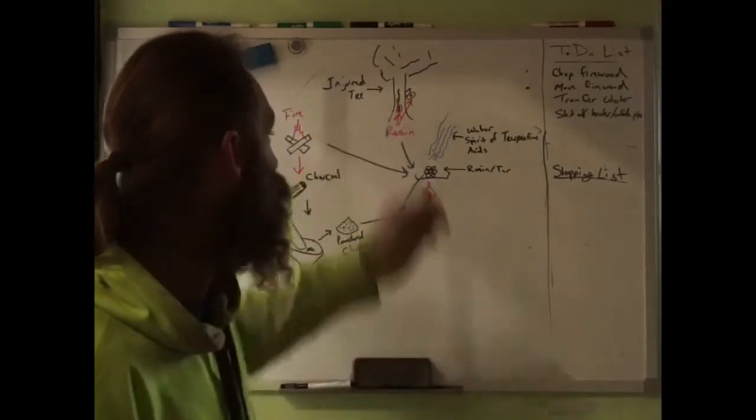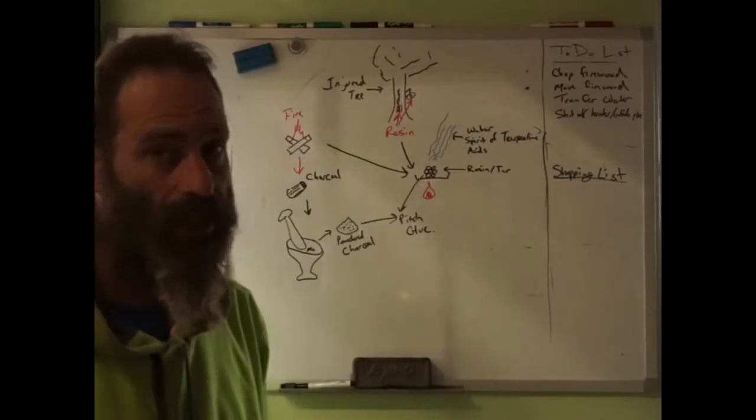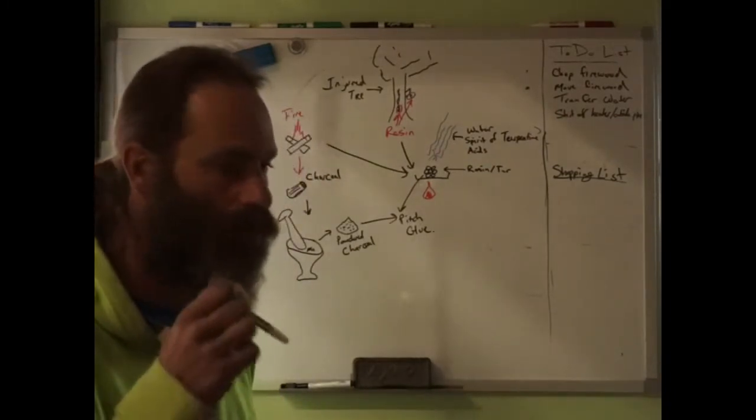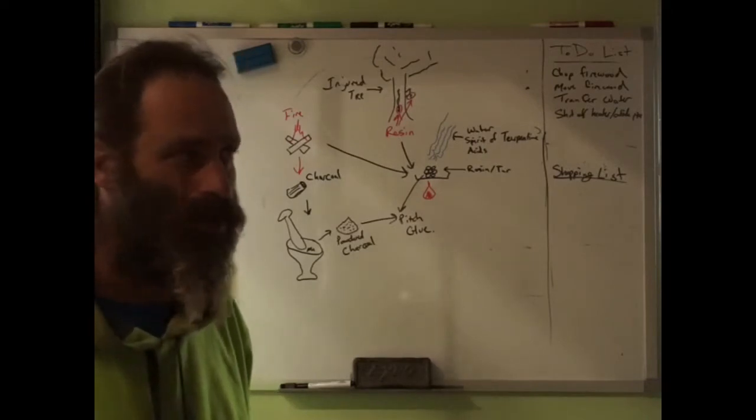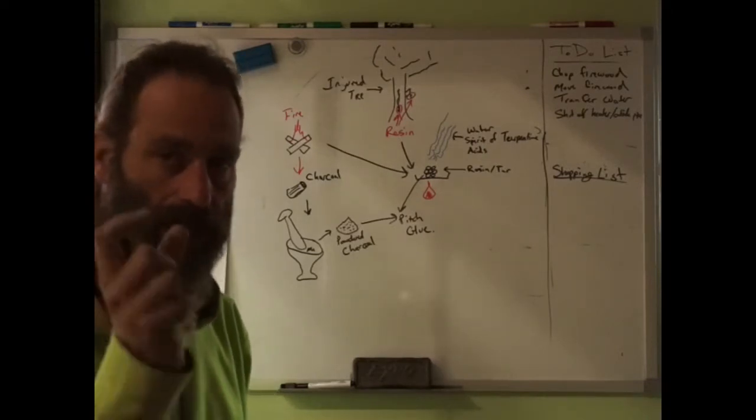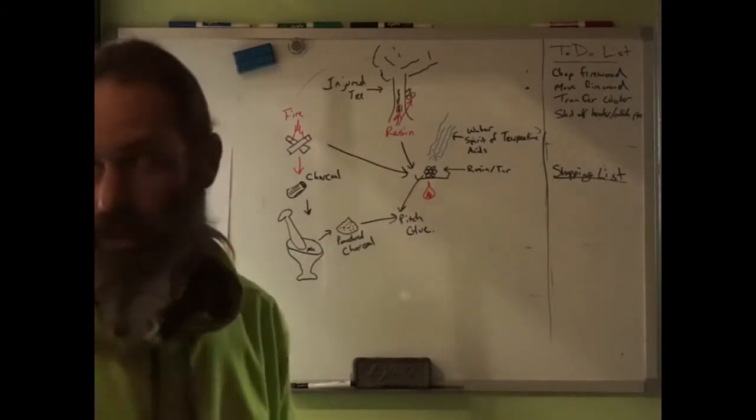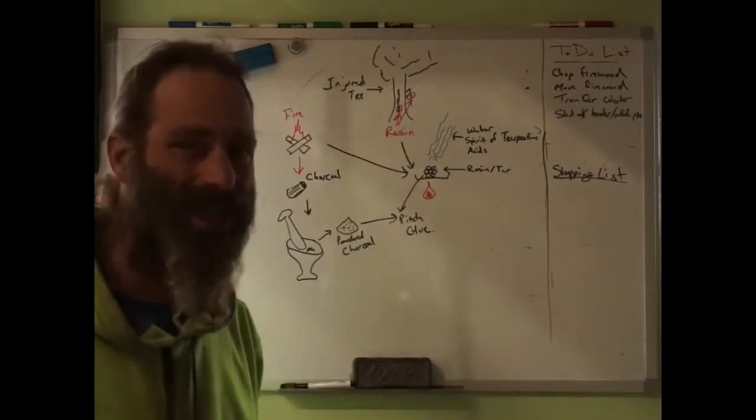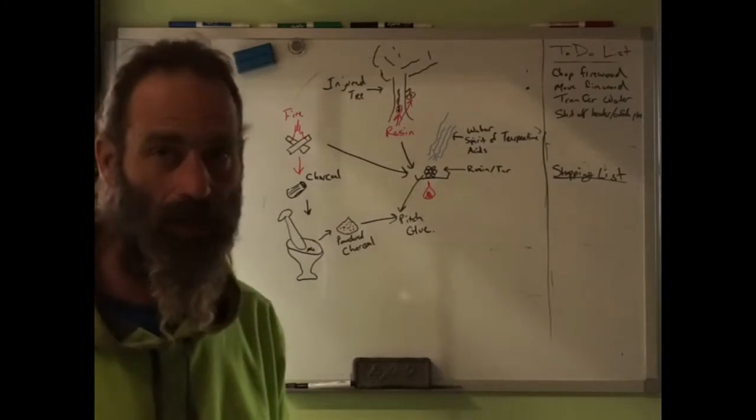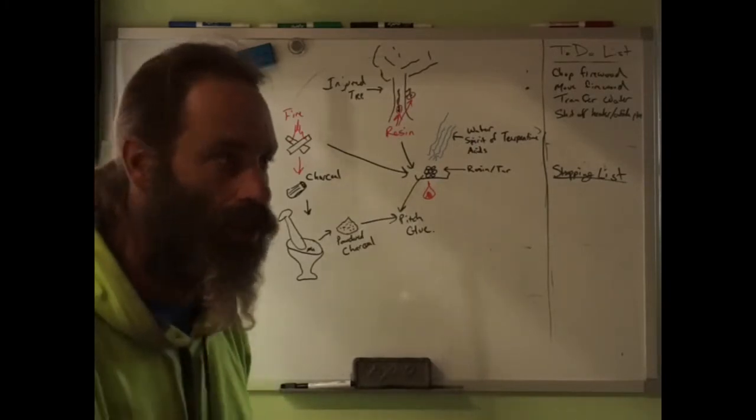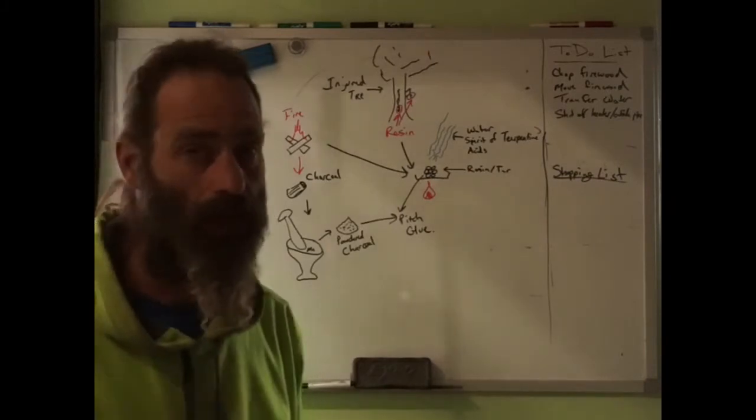So you start with a injured tree and this is where you're going to get your resin and this comes from conifers. So any kind of evergreen, most evergreens, anything with like long pointy needles, cedar is not so good for it. This eastern red cedar and junipers are not necessarily so good for it. They produce some resin too, but it's not really the same quality. Any injured tree will produce resin.